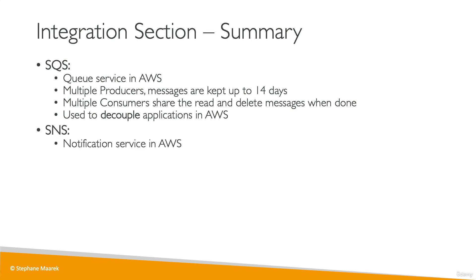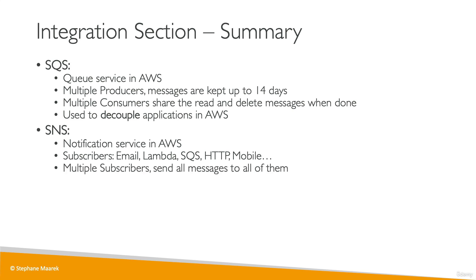SNS is a notification service in AWS, and we have producers and subscribers. Subscribers could be email, Lambda, SQS queues, HTTP, or mobile. If you have multiple subscribers onto one SNS topic, SNS will send a message to all of them. SNS doesn't retain any message, so it's not a durable store of messages. It's used for PubSub, for subscribers, for topics, and notifications within AWS.